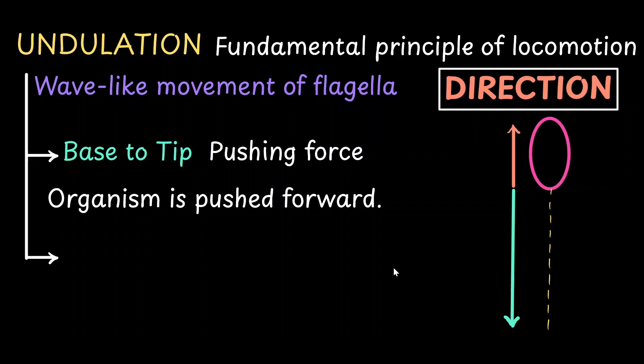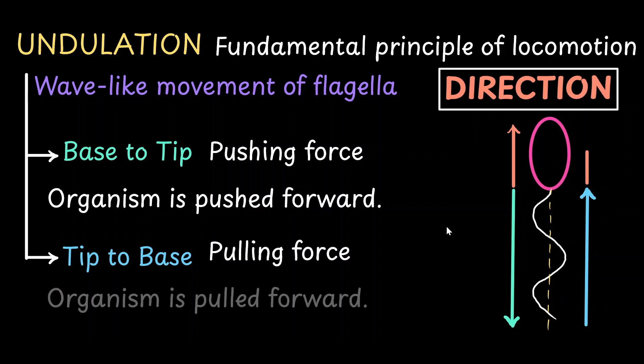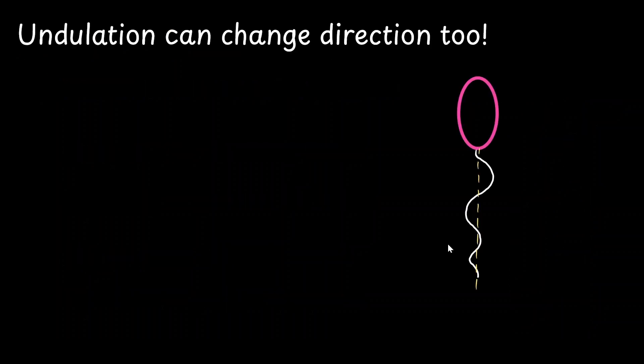In the next case, the wave is going to be moving from the tip to the base. This creates a pulling force that is directed towards the cell. And this also causes the organism to move forward. But here, rather than being pushed, it feels like the organism is being pulled forward. Undulation can also help in changing the direction of movement.